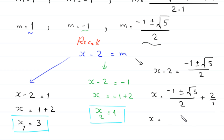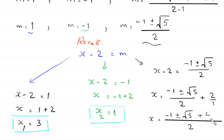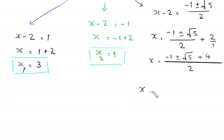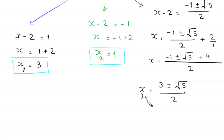Taking a common denominator of 2, x equals negative 1 plus or minus root 5, plus 4, all over 2, which gives x equals 3 plus or minus root 5, divided by 2. This is the third and fourth value of x. So we have four solutions of this equation.